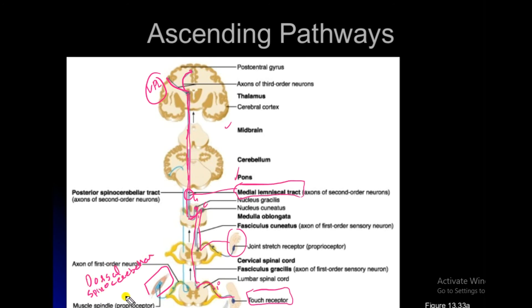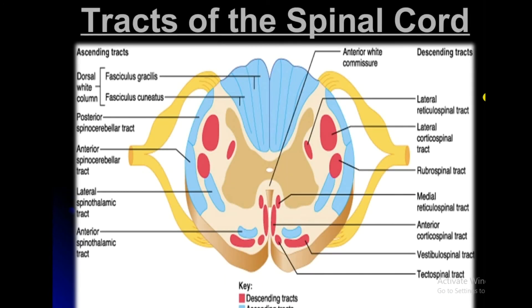Dorsal spinocerebellar tract gets into dorsal horn, then ascends through lateral column, then they reach into the medulla, and then they go into cerebellum.